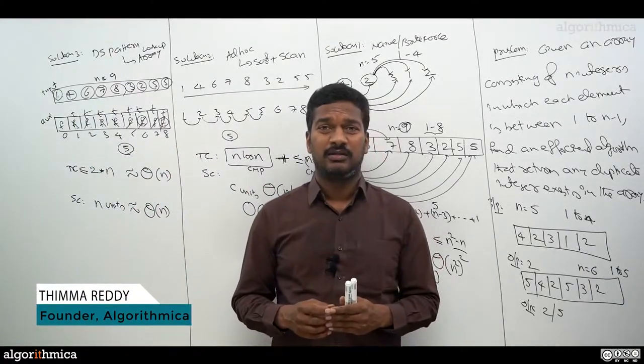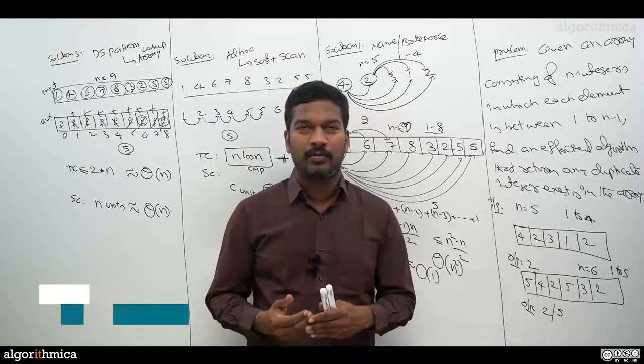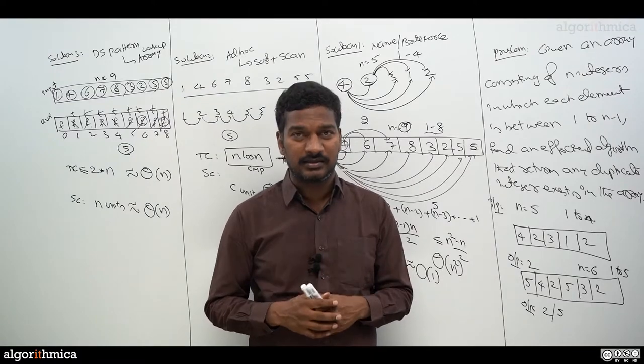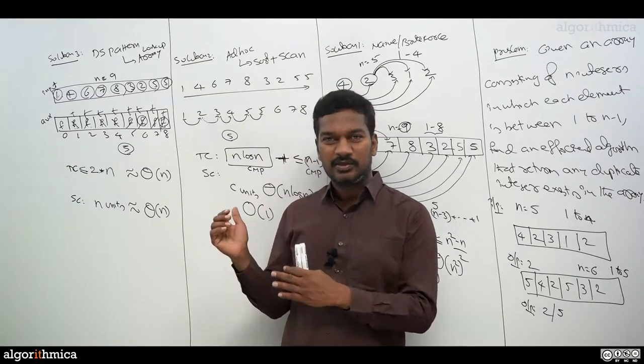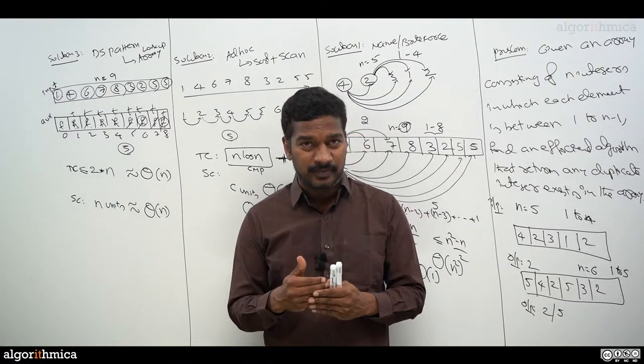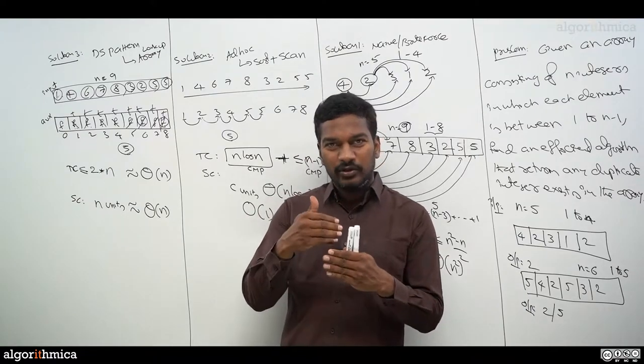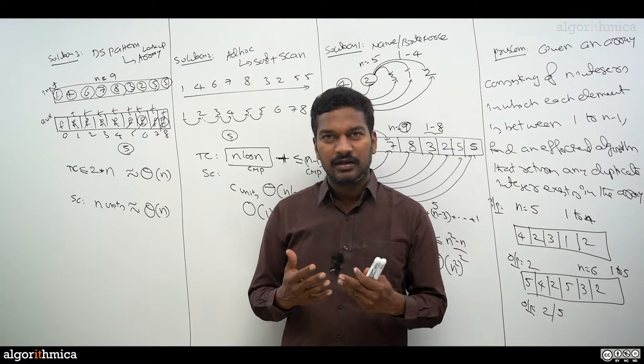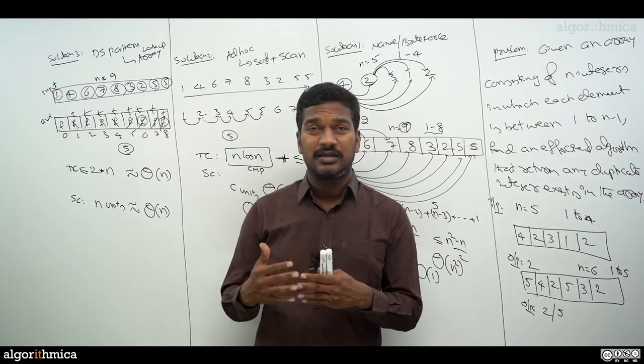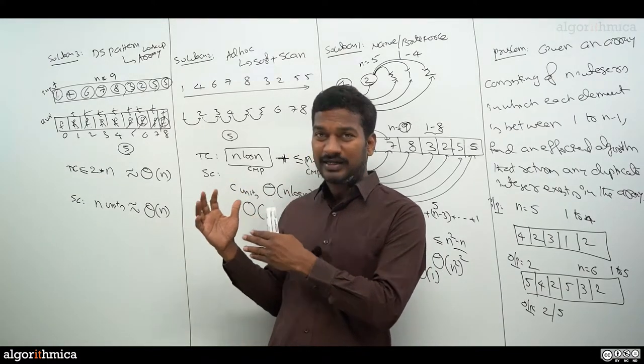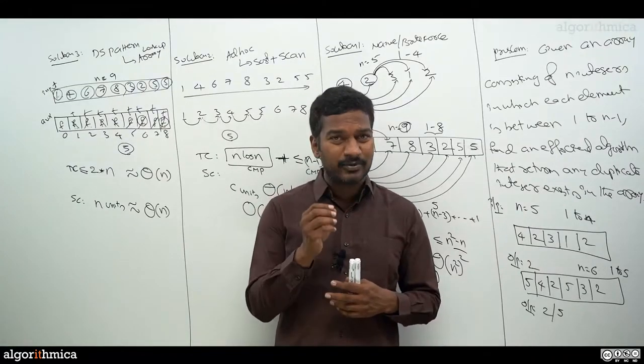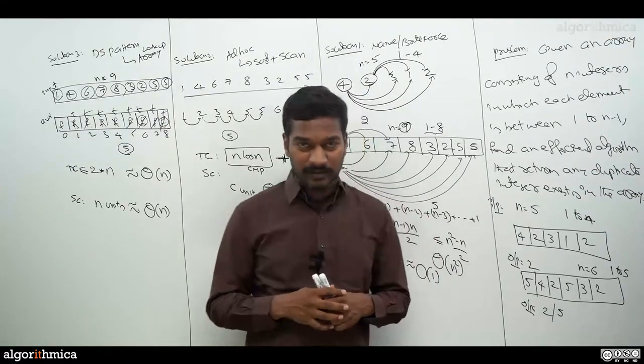So you have seen we have an algorithm here, ideally theta of n, a more tighter bound. What is the intuition in practice? The only pain we got in solution number 3 is extra space. Is there any way we can reduce the space and at the same time maintain the time? The only way to get betterment is to look at the existing solution. Is there any possibility of really making it better? Let's go a little more deeper into solution number 3.